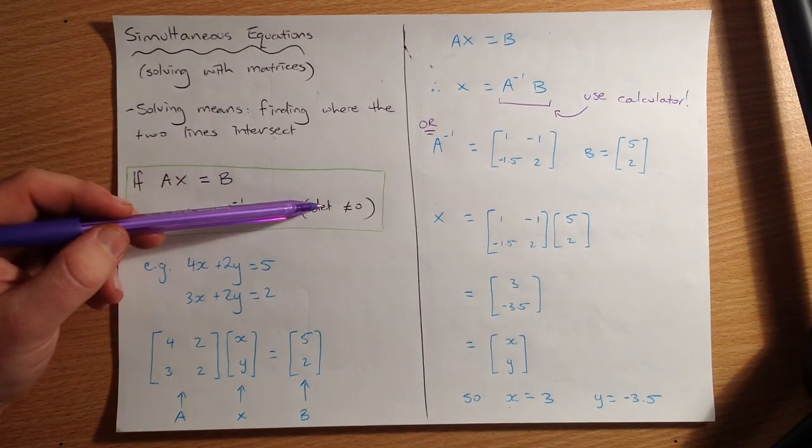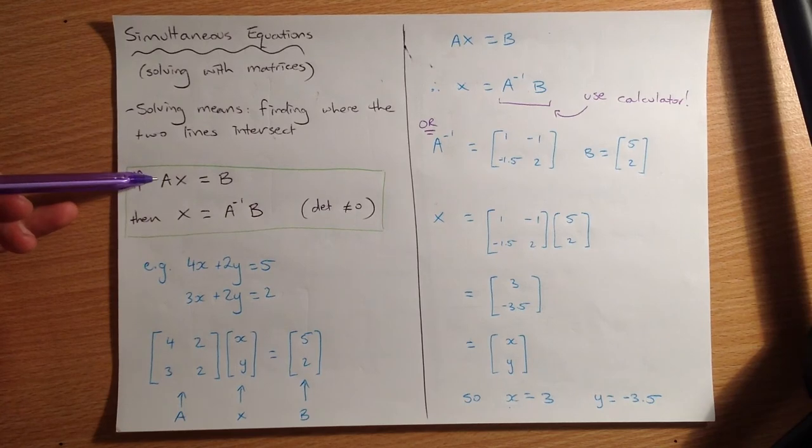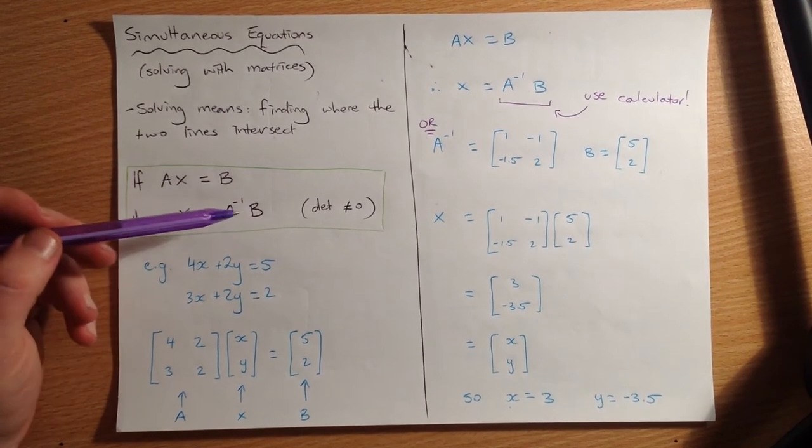The exception to that is if the determinant is zero. If the determinant of the matrix is zero, like the A matrix, then there will be no solutions. That's a pretty rare case, but it will happen occasionally. And we'll look at what happens if that does a little bit later.